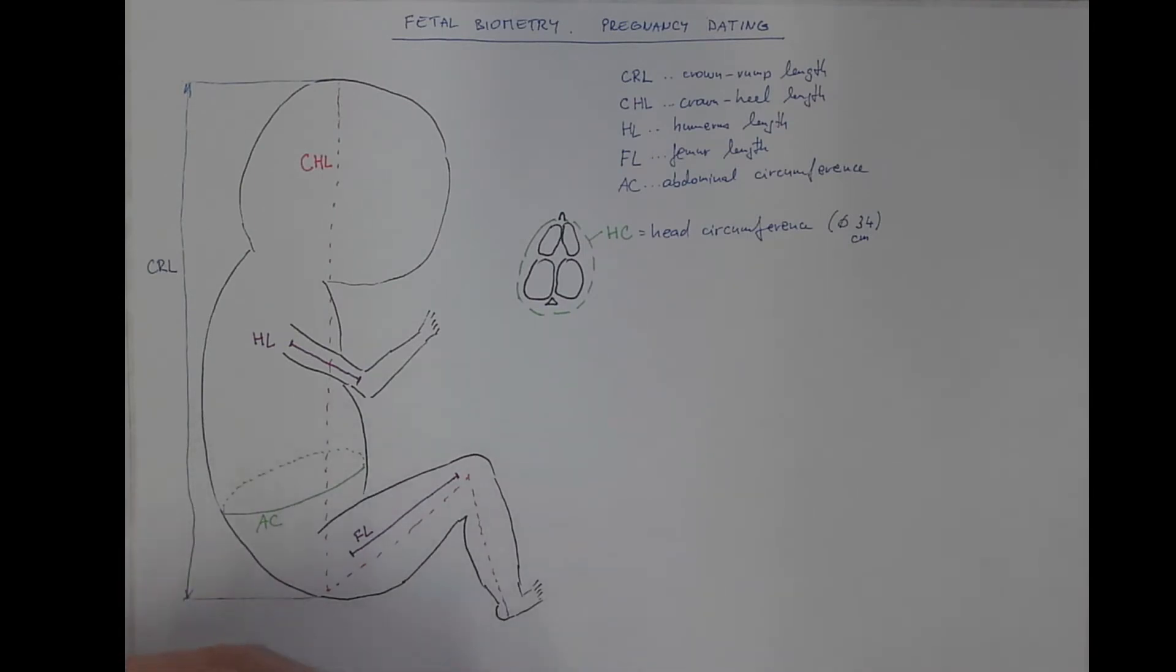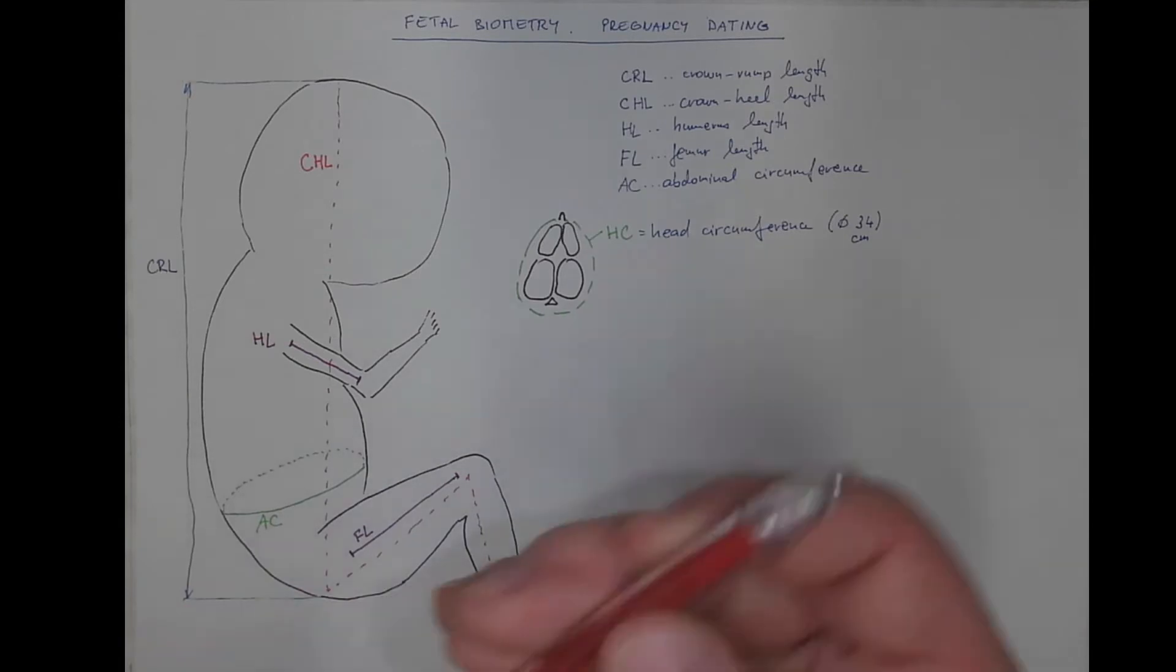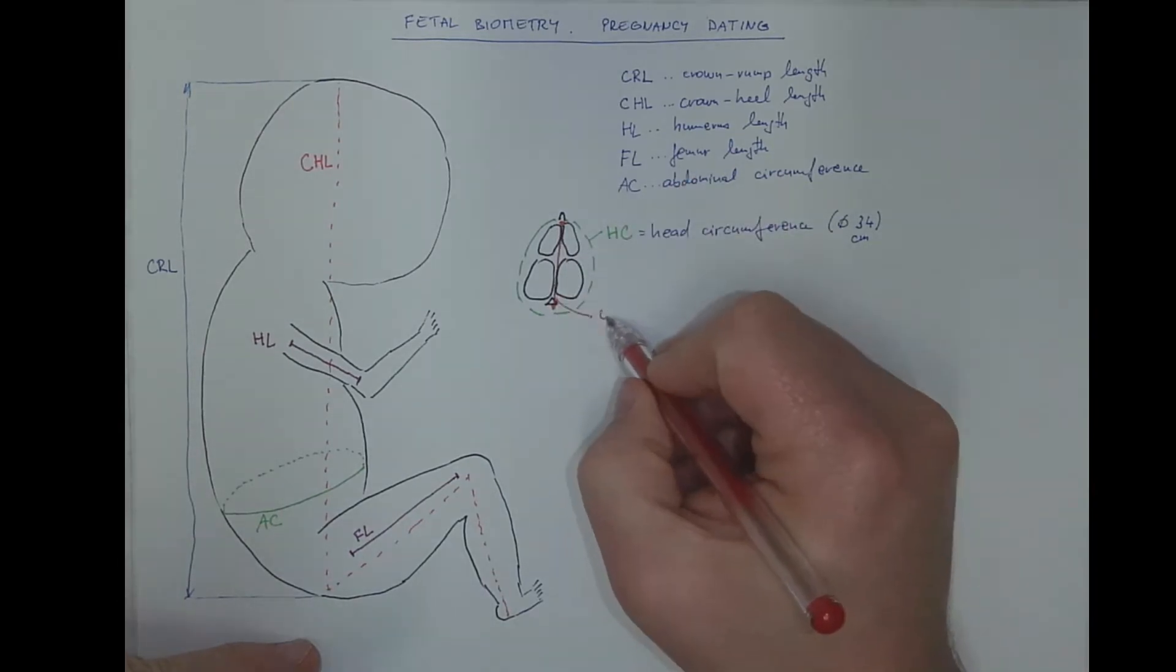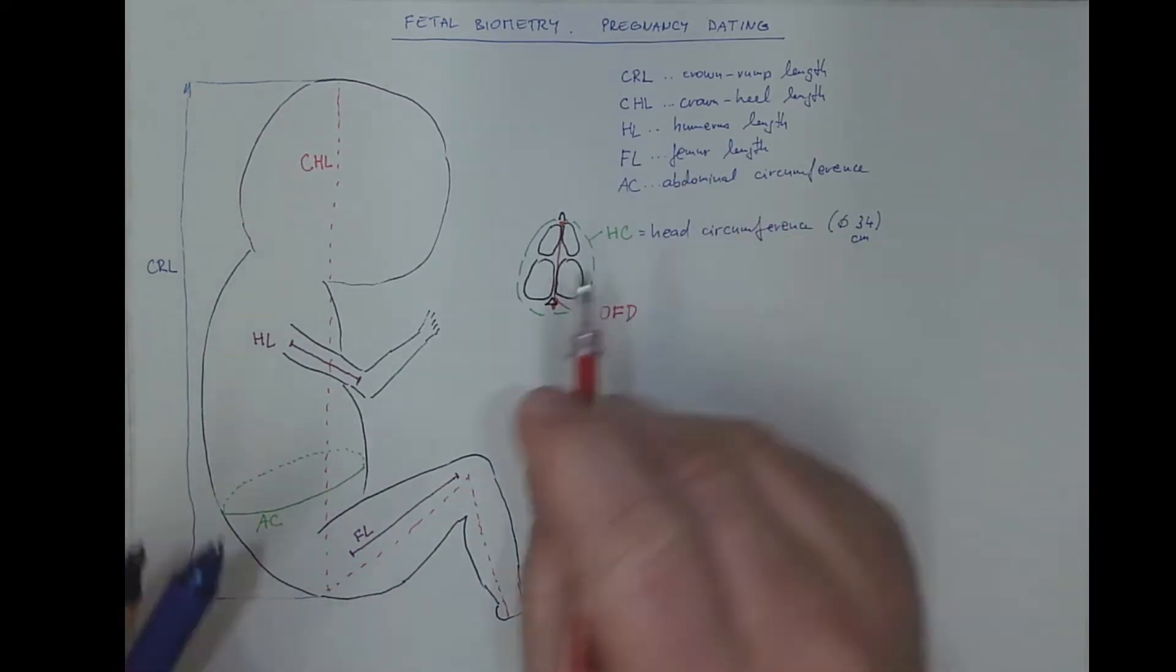You can measure the occipital frontal diameter from the frontal bones to the occiput. So that would be the occipital frontal diameter.